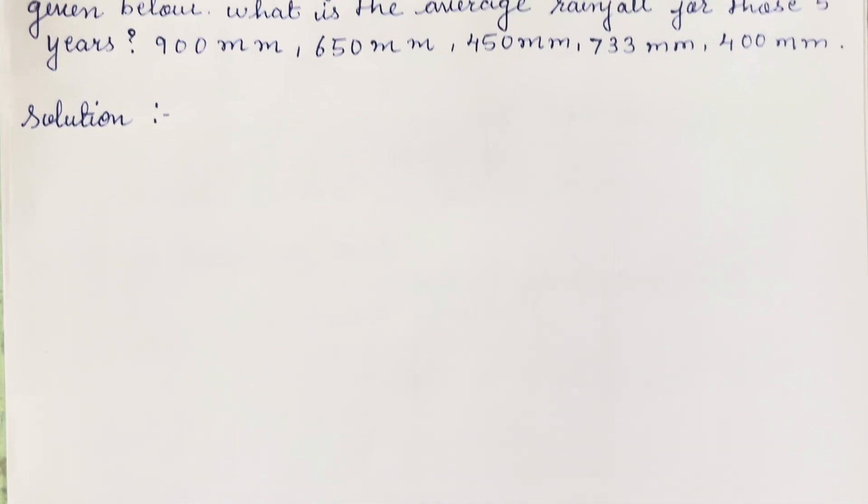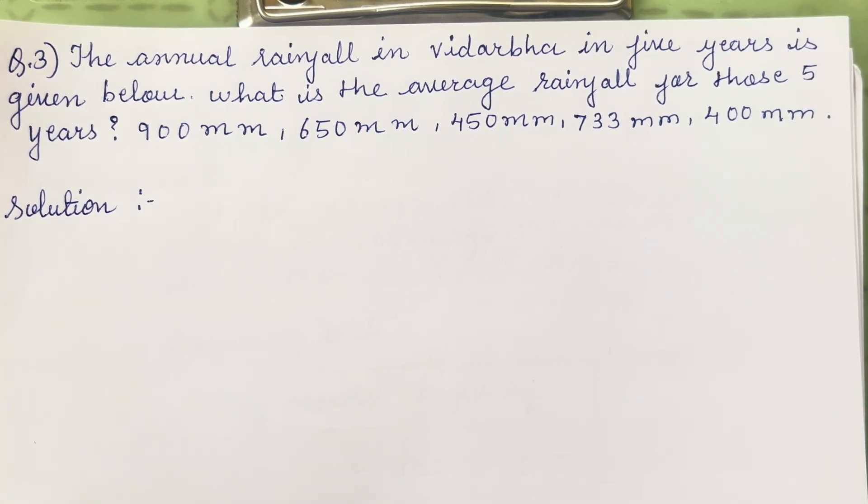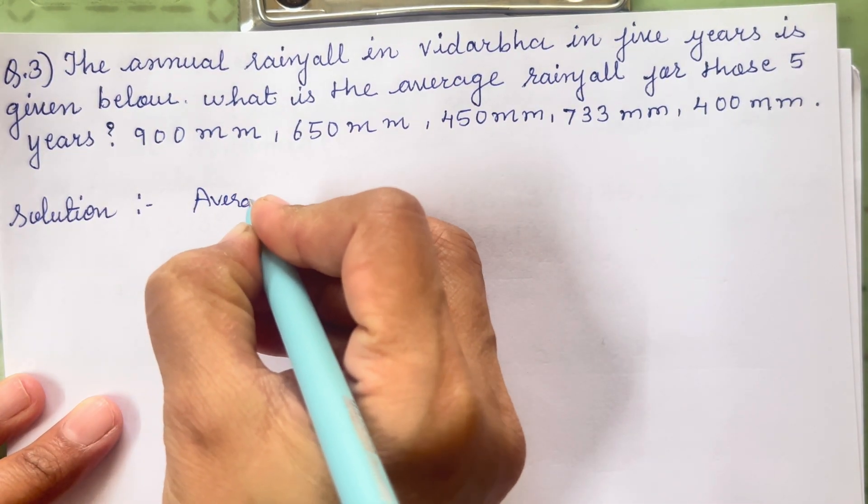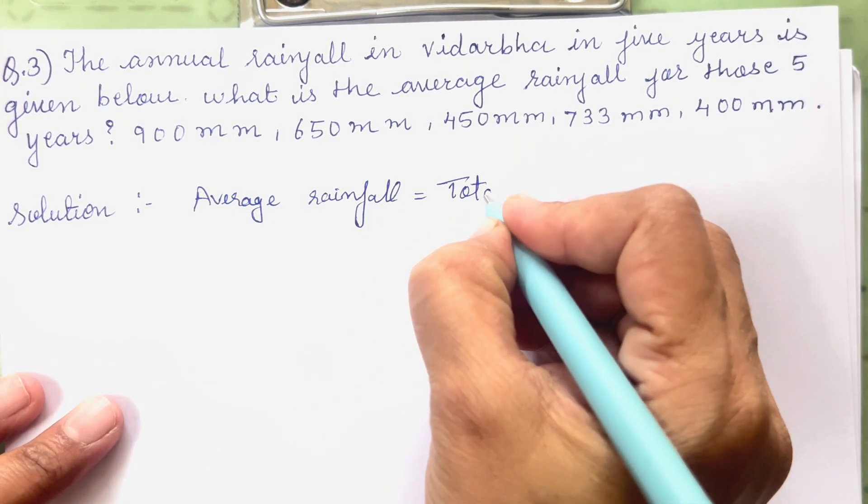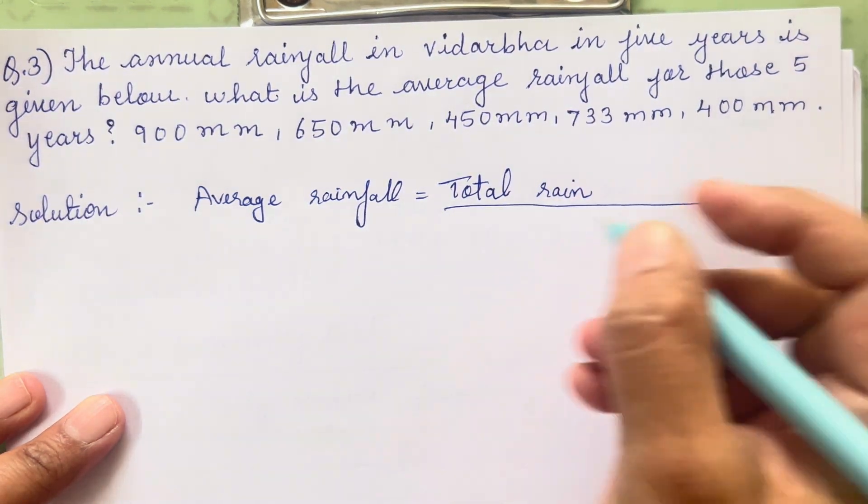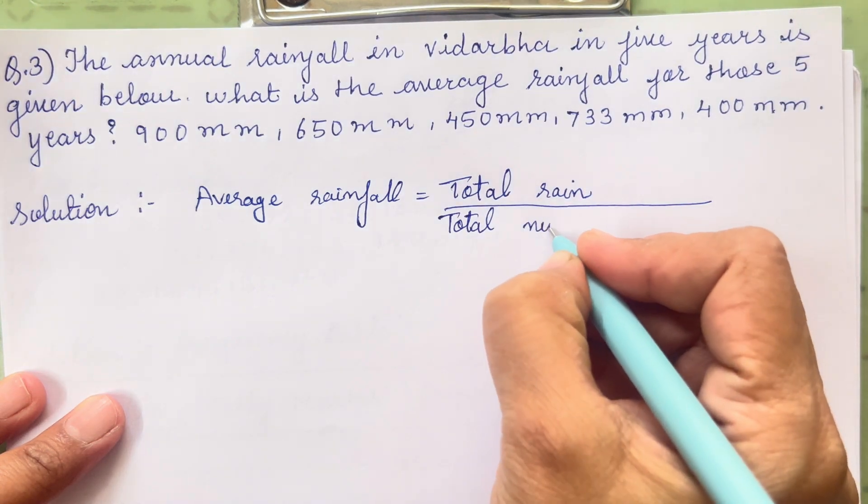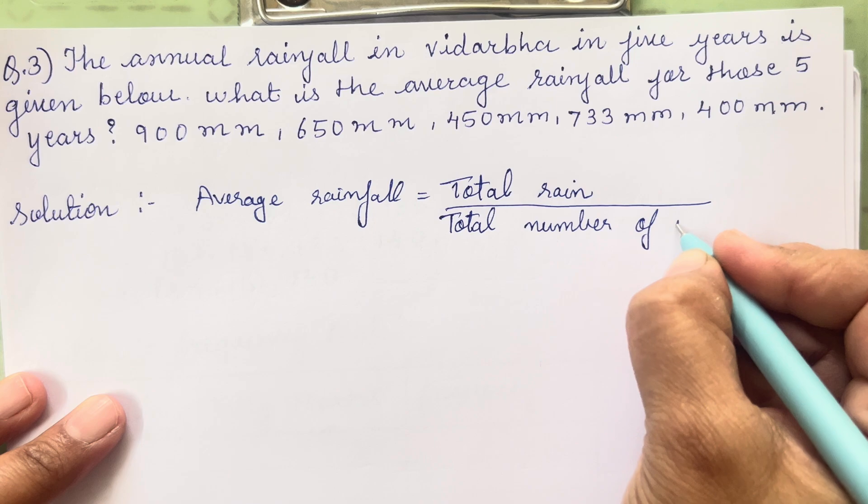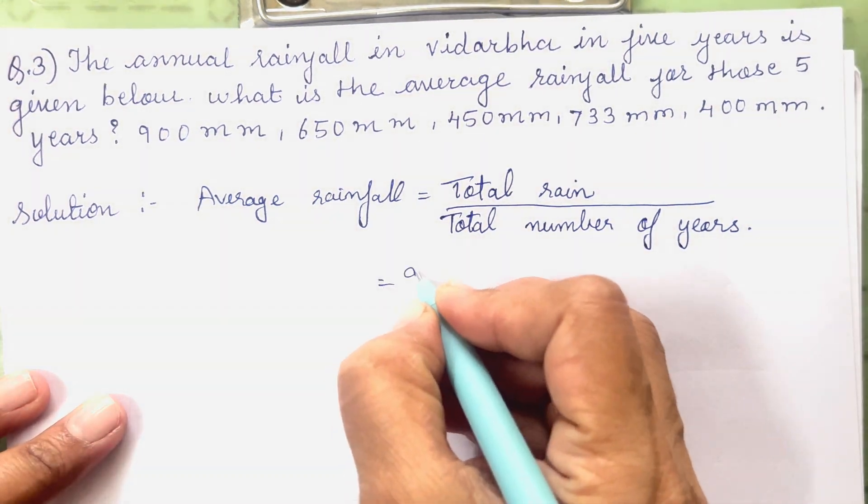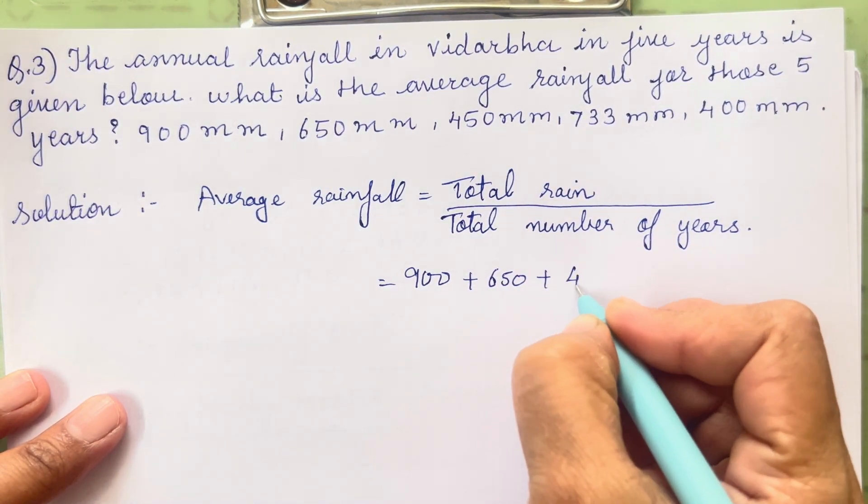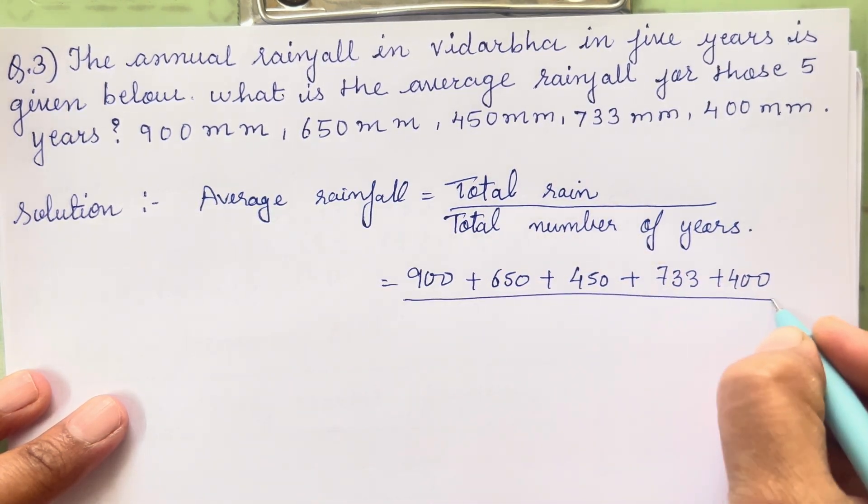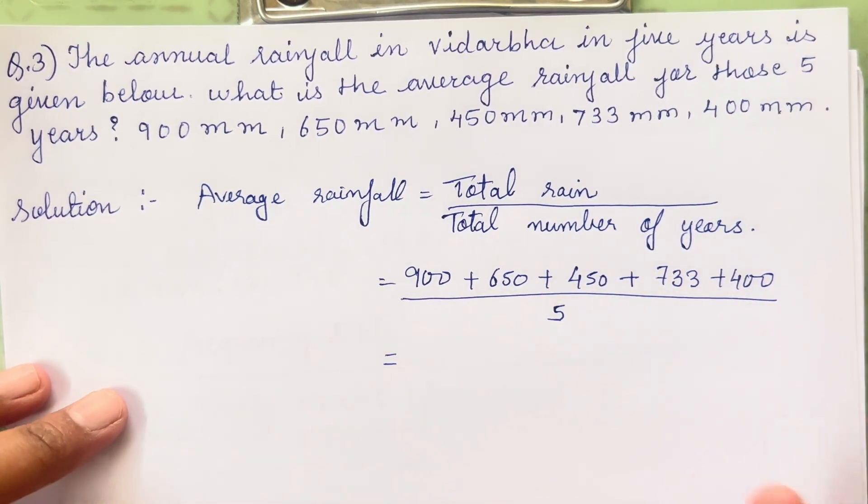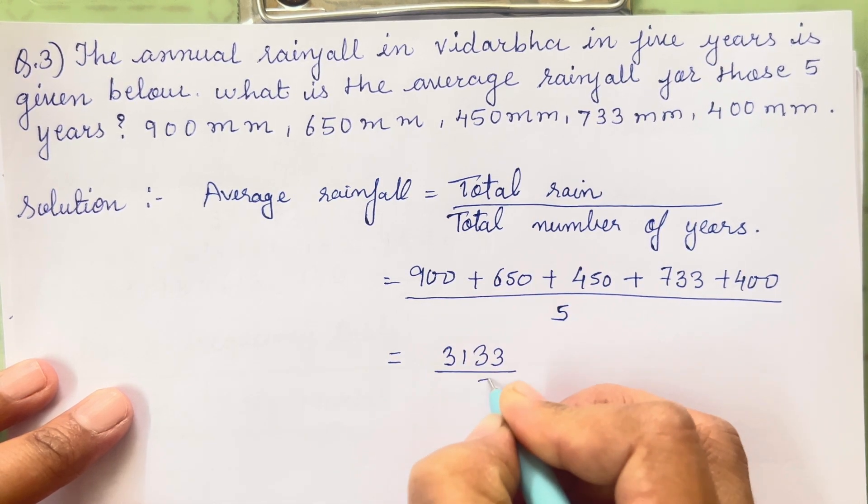Now let's move on to the third sum. The annual rainfall in 5 years is given below. What is the average rainfall for those 5 years? So 5 years average we have to find. Average rainfall is equal to total rain upon total number of years. So it is going to be 900 plus 650 plus 450 plus 733 plus 400 upon 5. Now addition is easy, you can add it. We will just solve the division factor.